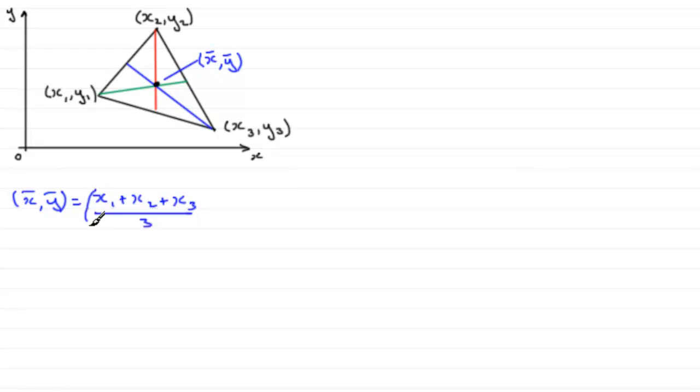And then for the y bar value, it's going to be y1 plus y2 plus y3, and that's all divided by 3. So, as you can see, it's very easy to find the centre of mass of a triangle if you've got the coordinates of the vertices.